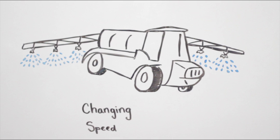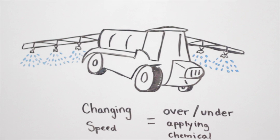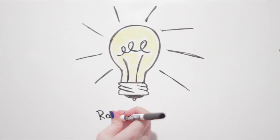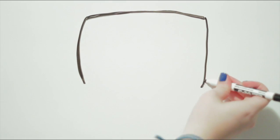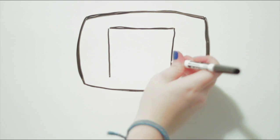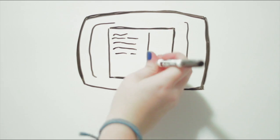They were always changing speed, meaning the applicator was constantly over and under applying the chemical. The solution? Rate controllers. To keep the application rate constant over the speed changes, rate controllers varied the pressure.